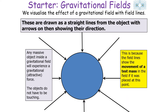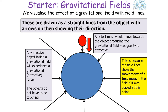Field lines show the movement of a test mass — a unit mass — at that particular point in the field. Any test mass would move towards the object producing the gravitational field because gravity is an attractive force. Therefore, field lines in gravitational fields always point inwards to the object producing the field.